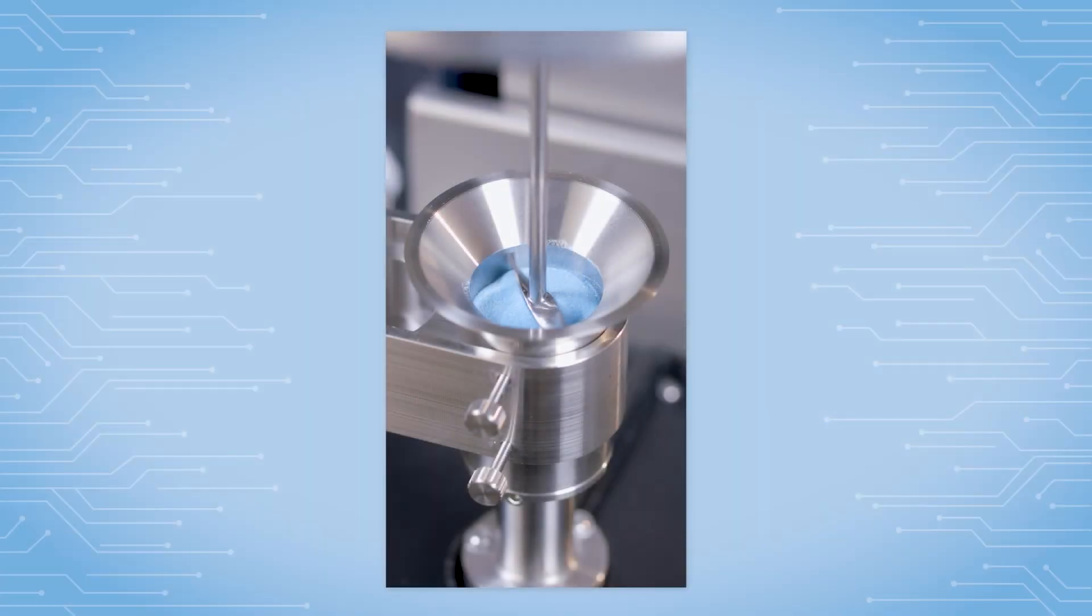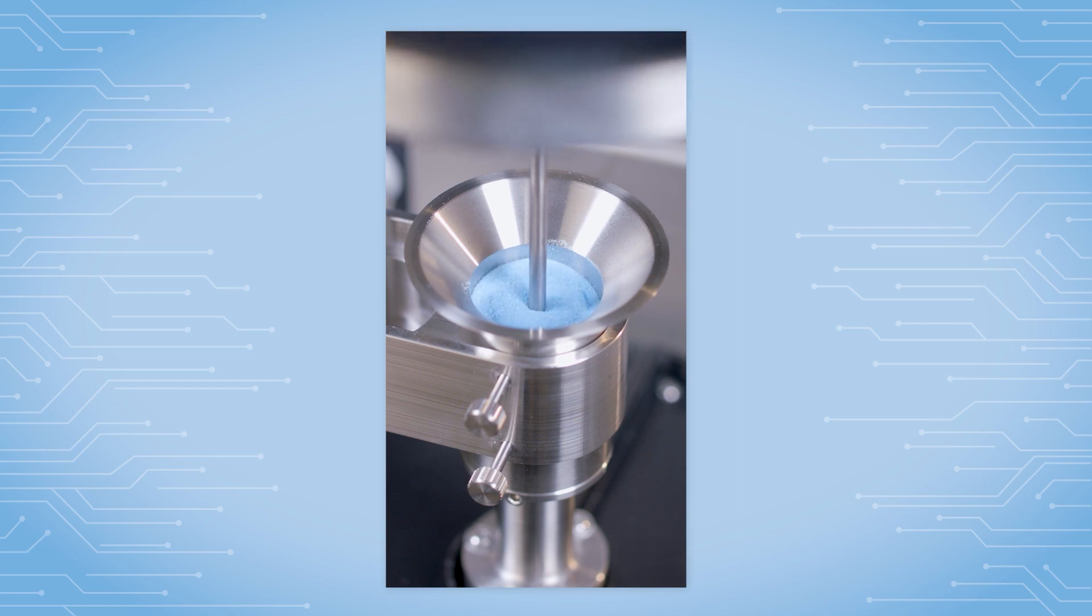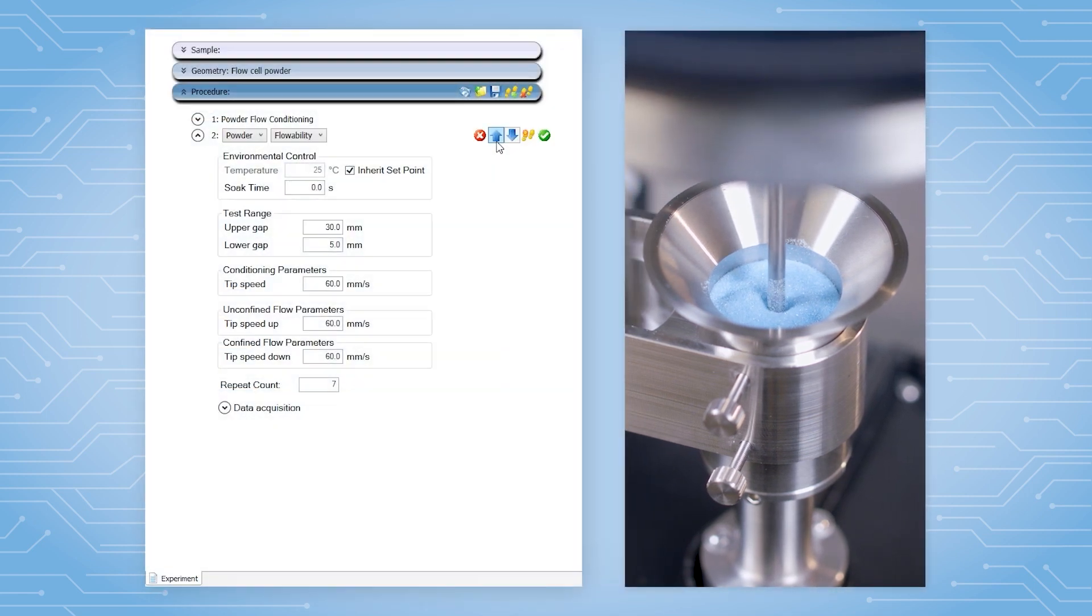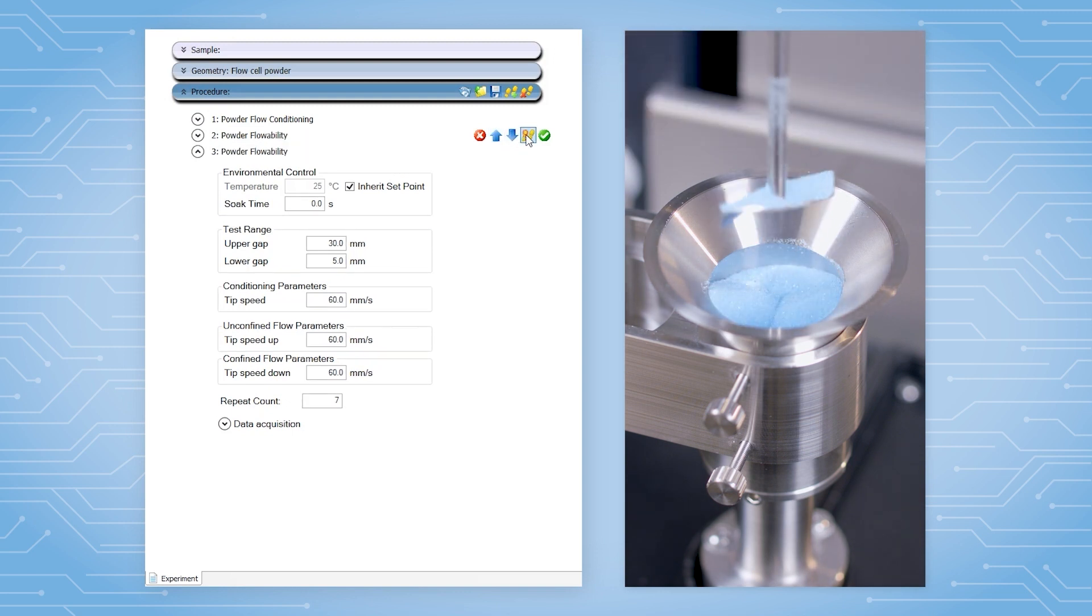The powder flow ability step performs measurements of both unconfined flow, raising the rotor upwards through the powder, and confined flow, driving the rotor down into the powder with a conditioning step between measurements. Multiple repeats of the sequence are typically used to evaluate powder stability.